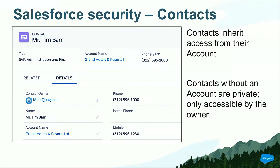One last important point about contacts: contacts inherit their access from accounts. A contact itself doesn't have much in the way of security settings — it's always getting its security settings from the account it's associated with. If you have a contact that doesn't have an account, that contact is inherently private and only the owner has access. In my job, I'll create a bunch of contacts and then go into a community and wonder where all my contacts are — and that's because I've forgotten to associate those contacts to an account.